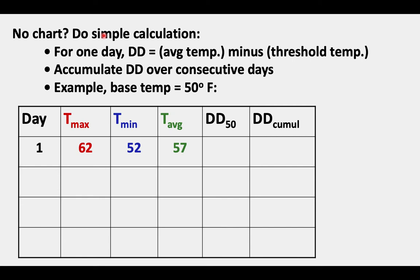If you don't have access to a lookup chart, you can do a very simple calculation. For one day, degree day is the average temperature minus the threshold temperature, and you accumulate degree days over consecutive days. The base temperature for codling moth is 50 degrees Fahrenheit. So on day one, the daily high was 62 and the low was 52. You take the average of those two numbers — it's 57. Then to get the degree days, you subtract your base temperature of 50 from 57, giving you 7 degree days. So the cumulative is 7.